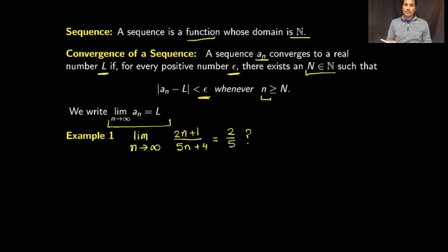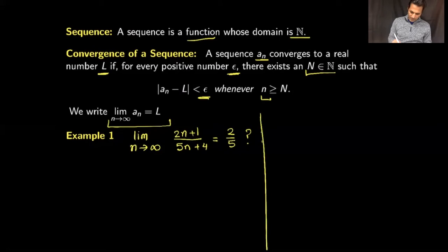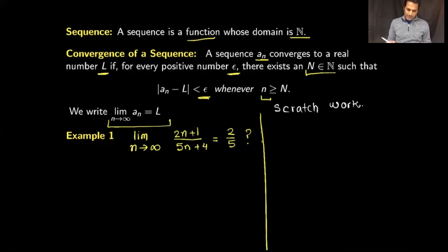In our very first example, we will show that the limit of the sequence (2n+1)/(5n+4) is equal to 2/5, and we will show this using the definition of convergence. Before I give the proof, I will do some scratch work.